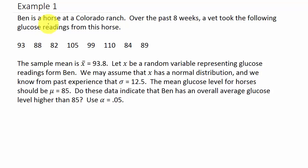Alright, it says Ben is a horse at a Colorado ranch. Over the past eight weeks, a vet took the following glucose readings from this horse, and that's these values here. The sample mean is x bar equals 93.8. The x bar we get from adding all this up and dividing by one, two, three, four, five, six, seven, eight. If they don't give you x bar, you can calculate it.